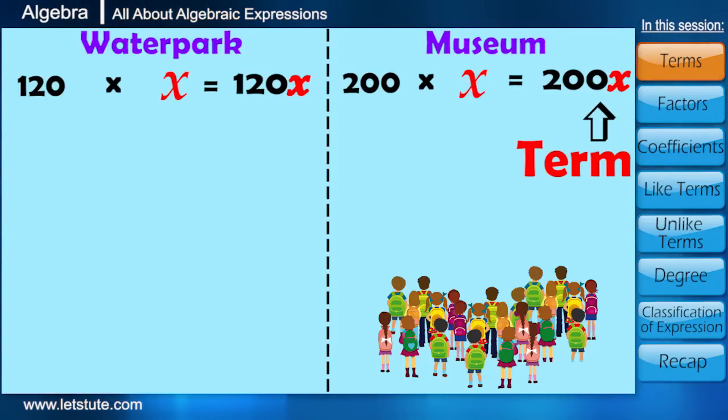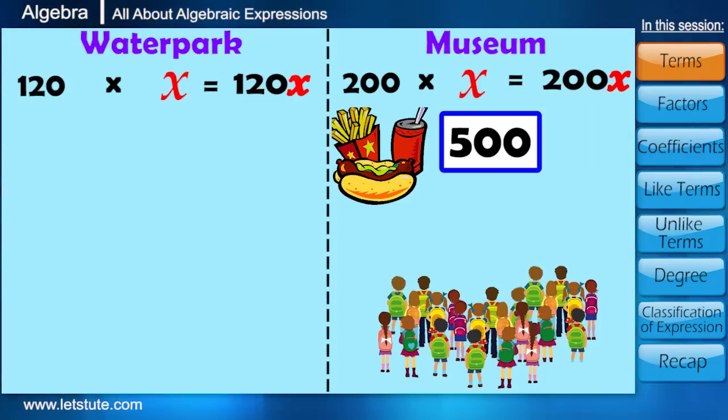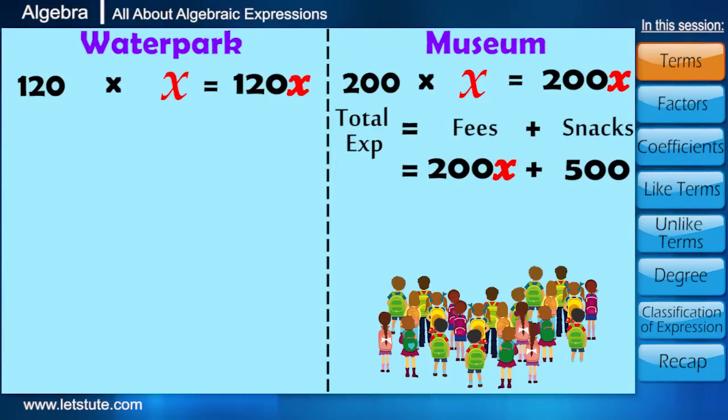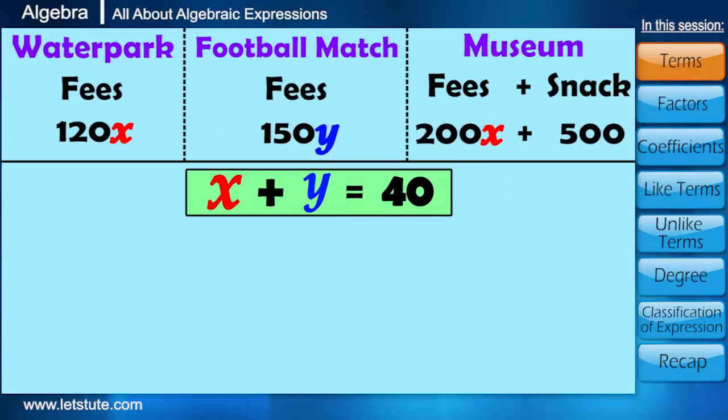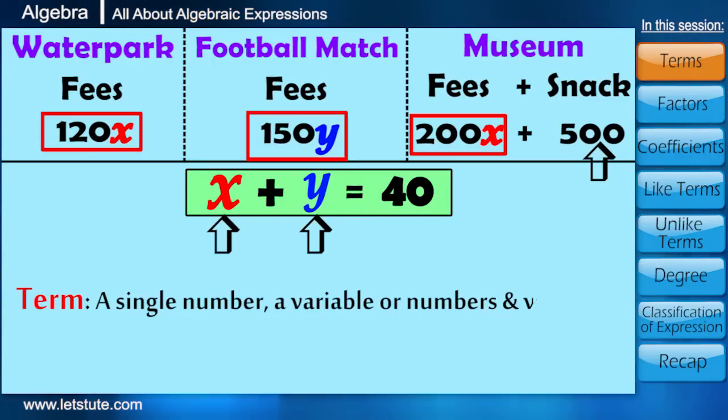Now, suppose school has already paid 500 bucks for snacks for the students visiting the museum. Then the total expenditure will be 200X plus 500. So here can we call 500 also as a term? Yes, it is a term. In fact, here variables X and Y are also called terms. So let's define a term now. A term is either a single number or a variable or numbers and variables multiplied together in an expression.